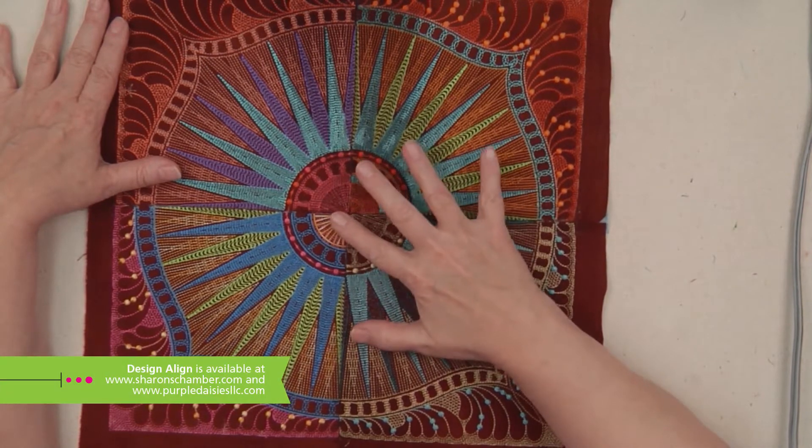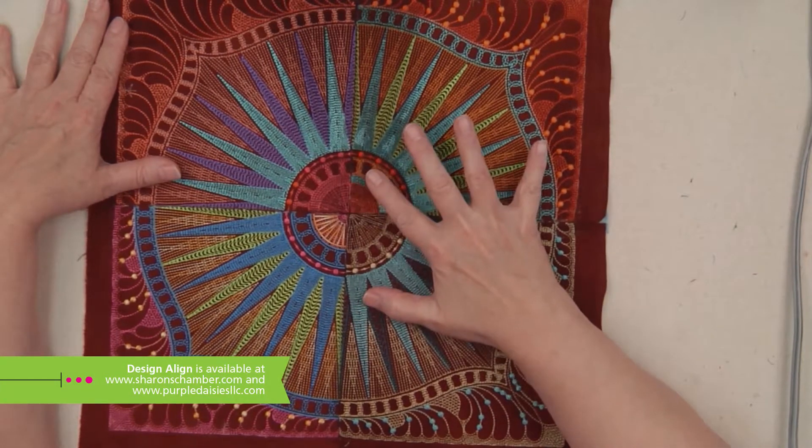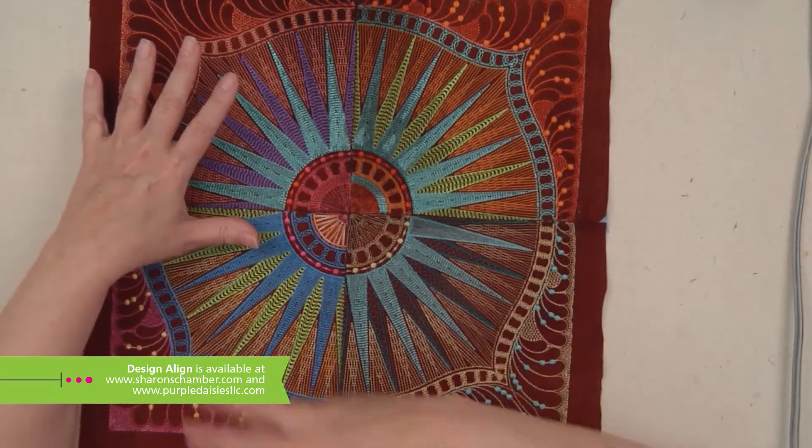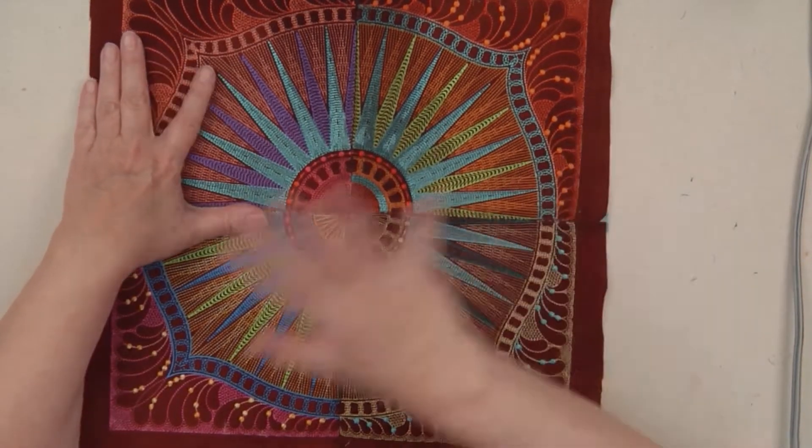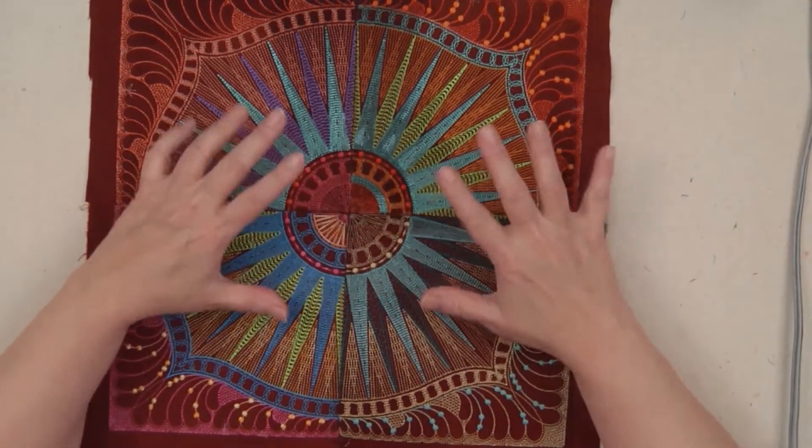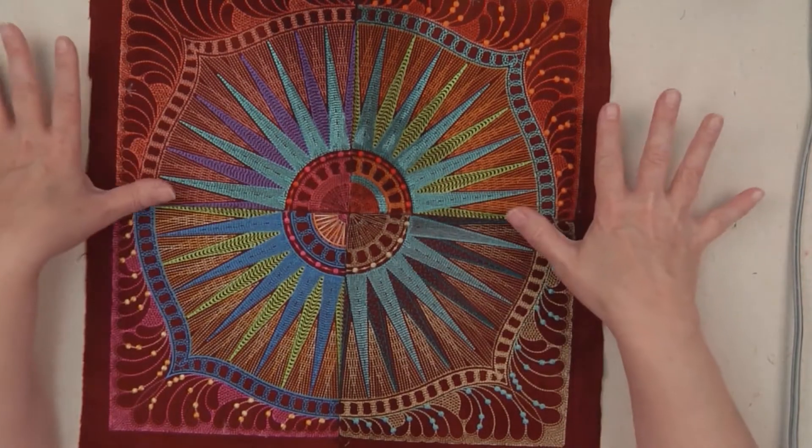This blocking process is done after all of the construction is done. So if you have another round to go on this piece, you do not want to remove the water-soluble until you're completely done with the whole project.